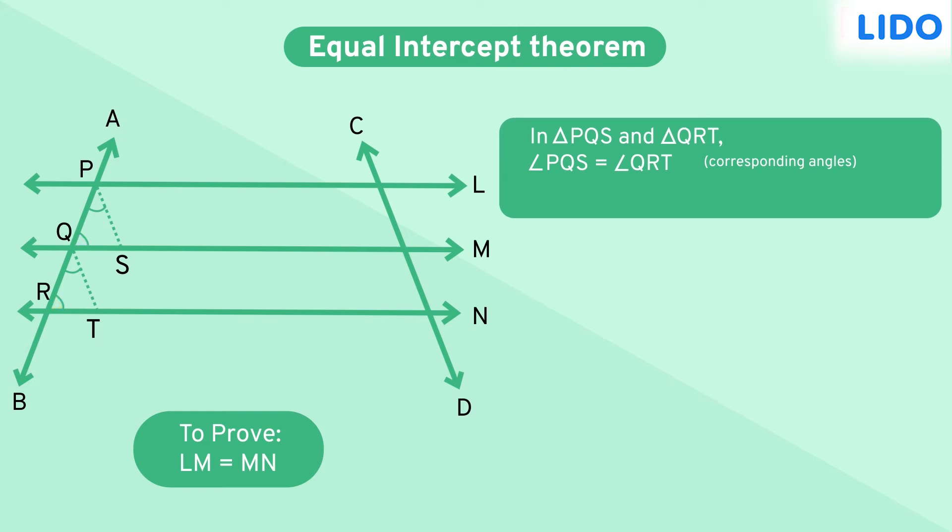Also, side PQ is equal to QR is what we already know. Now, angle QPS and angle RQT are forming the corresponding angles. This proves that triangle PQS and triangle QRT are congruent by the angle-side-angle congruency criterion.